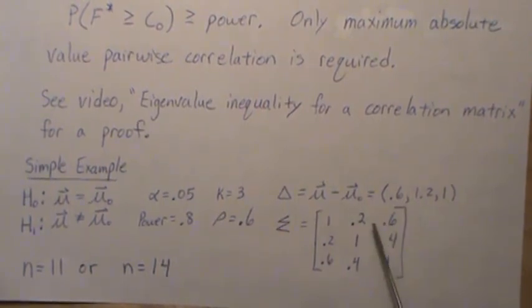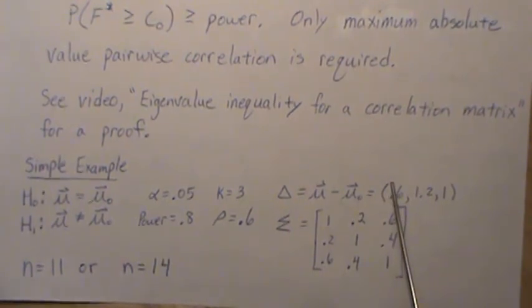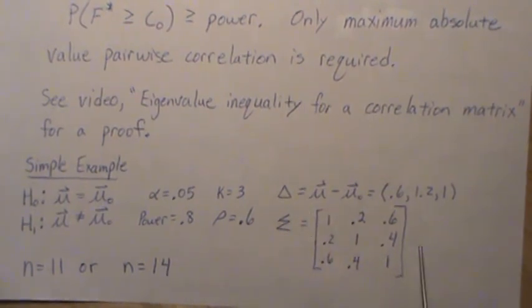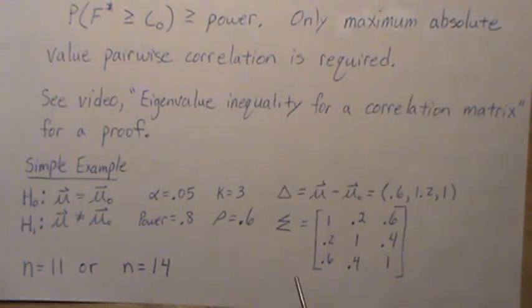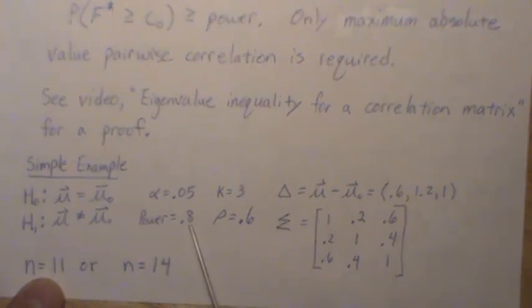And I came up with these numbers because that's the numbers that Speckman used, except they use 1.6, 1.2, and 1. I just like 0.6 better because it makes the sample size larger. So if this were the true correlation matrix, that would make the maximum pairwise correlation 0.6. So if we use an estimate of this or the true covariance matrix, we would need a sample size of 11 for this to have 80% power.